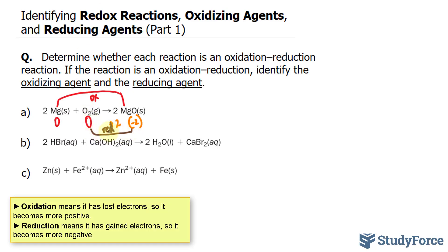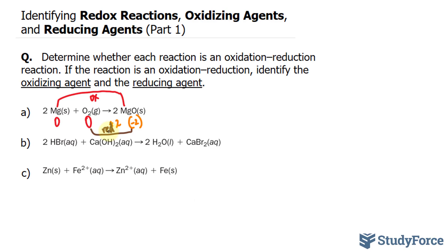The way you determine the oxidizing and reducing agents is you look at the opposite molecule. The oxidizing agent is O₂, and the reducing agent is magnesium. You always choose the opposite.